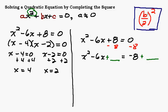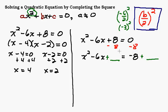This is where the b over 2 squared thing comes in — that's what you're going to want to add to both sides. So what's your b value here? Negative 6. So what we want to put in this blank is negative 6 over 2 squared, which is negative 3 squared, which is a positive 9. So we add 9 there and 9 there.